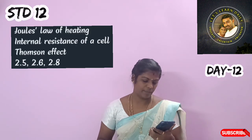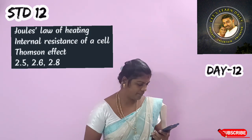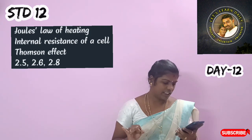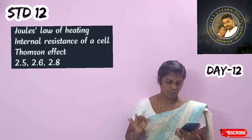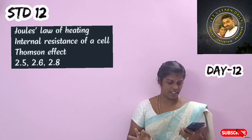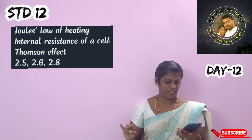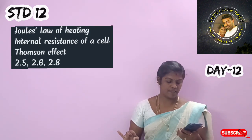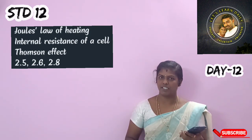First up, 12th standard: Joule's law of heating, internal resistance of your cell, Thomson effect. Short answers: sections 2.5, 2.6, and 2.8. Example sums — in the 5th standard you can see R.